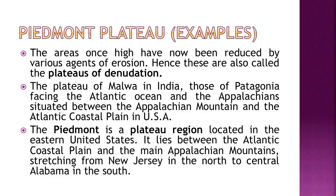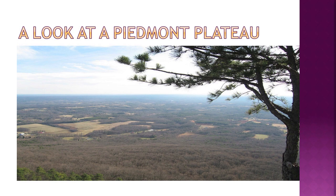Piedmont plateaus are areas once high that have been reduced by agents of gradation — also known as plateaus of denudation. Examples include the Malwa Plateau in India, Patagonia facing the Atlantic Ocean, and the Appalachian Plateau between the Appalachian mountains and the Atlantic coastal plain in the USA. The Piedmont region in the eastern United States lies between the Atlantic coastal plain and the main Appalachian mountains, stretching from New Jersey to central Alabama.